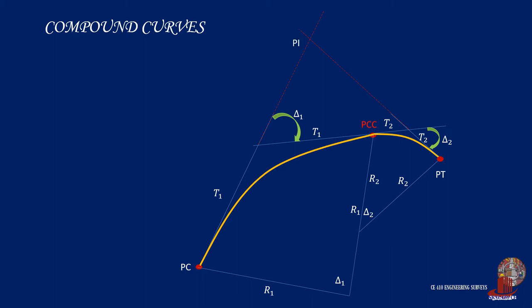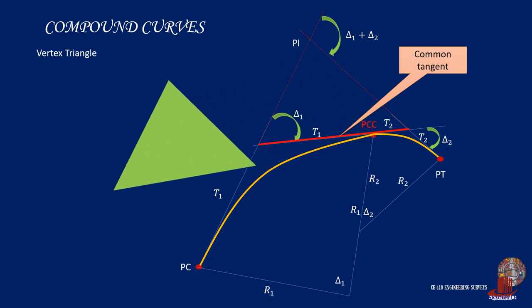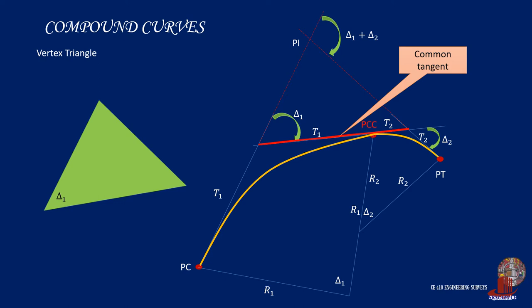Extending the backward tangent of the first curve and the forward tangent of the second curve will intersect at the vertex V or point of intersection PI. The angle delta they form will be the sum of both central angles. At PCC or point of the compound curve, the tangents of both curves will also form a straight line and are combined to be the common tangent, where T equals T1 plus T2. The common tangent will also form a triangle called the vertex triangle, which contains the central angles delta 1 and delta 2, the common tangent T1 plus T2, and the other angle is computed as 180 degrees less delta 1 minus delta 2. The sides of the vertex triangle are denoted as A and B, and can be computed using sine law.